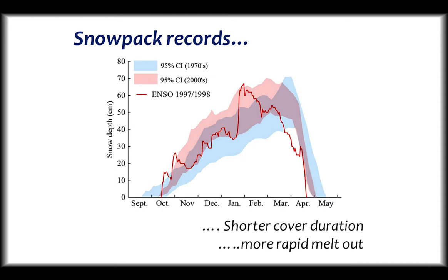The difference in magnitude doesn't change very much, but the time duration of snowpack coverage is reduced. Also, the time over which the snowpack melts is also reduced. So we should start thinking: if that happens, maybe floods are more likely and could occur earlier. That is a possibility if you interpret this graphic.